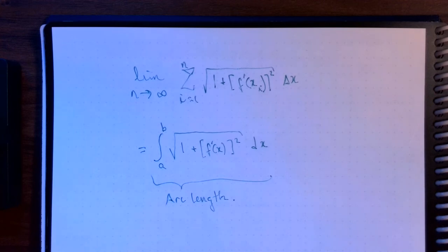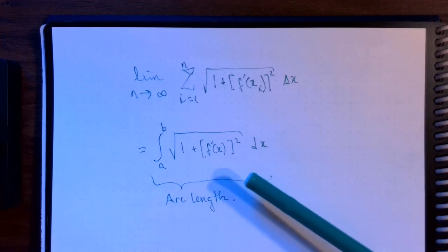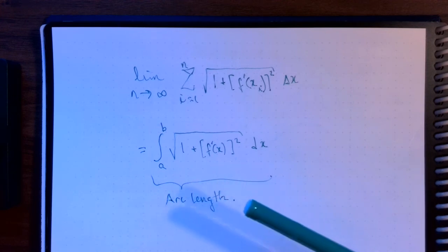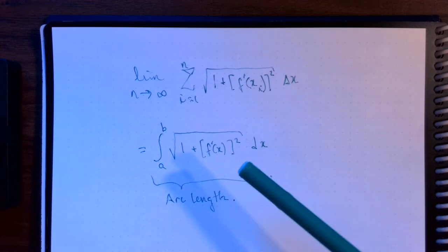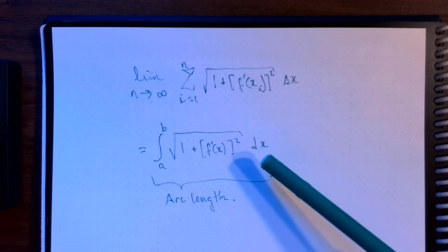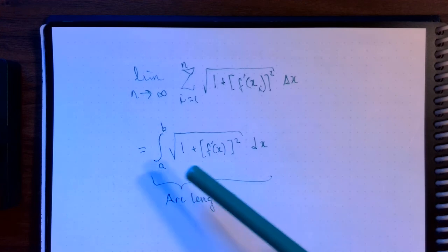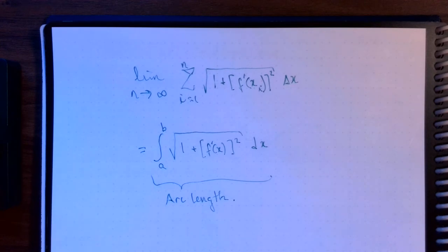Now, in general, these arc length integrals can be kind of tough. So don't expect to be able to just write down any old function f of x and be able to do this by finding an antiderivative because of the square root business. Things can get a little tricky. So typically when we encounter this in a calculus class, they have engineered examples for us to use that will work nicely with this arc length formula.